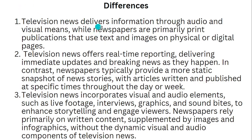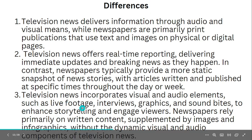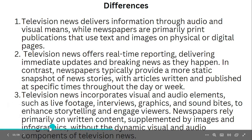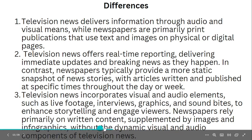Differences: Television news delivers information through audio and visual means, while newspapers are primarily print publications that use text and images on physical or digital pages. Television news offers real-time reporting, delivering immediate updates and breaking news as they happen. In contrast, newspapers typically provide a more static snapshot of news stories. Television news incorporates visual and audio elements such as live footage, interviews, graphics, and sound bites. Newspapers rely primarily on written content supplemented by images and infographics, without the dynamic visual and audio components of television news.